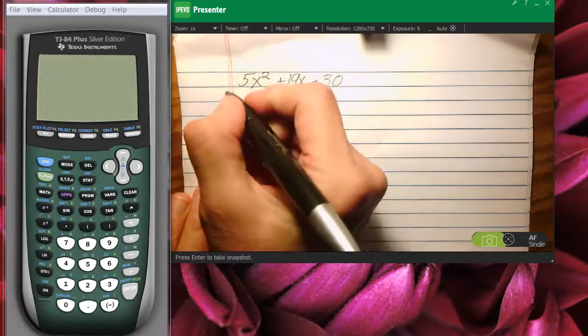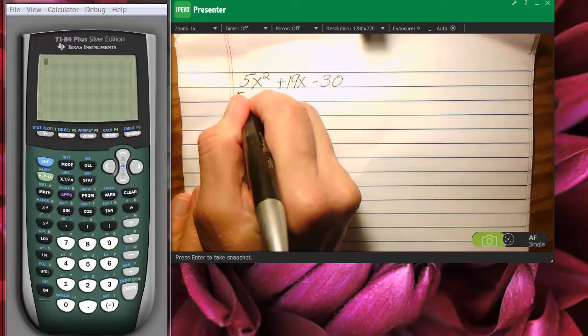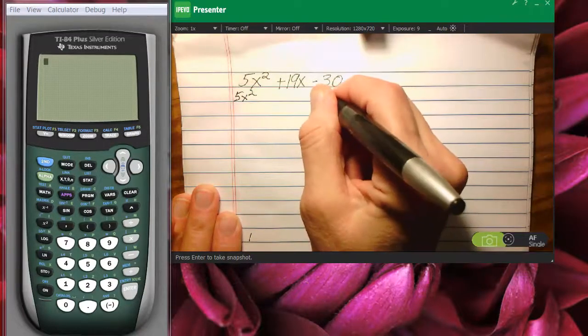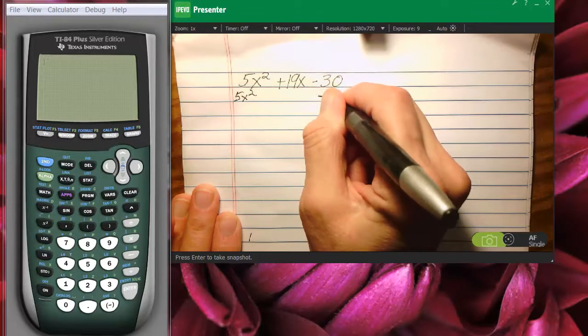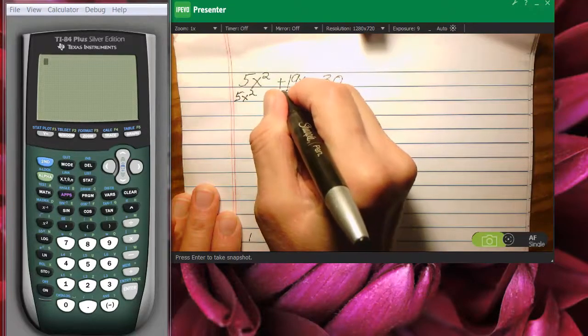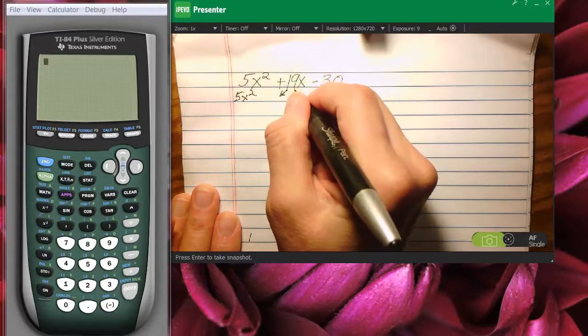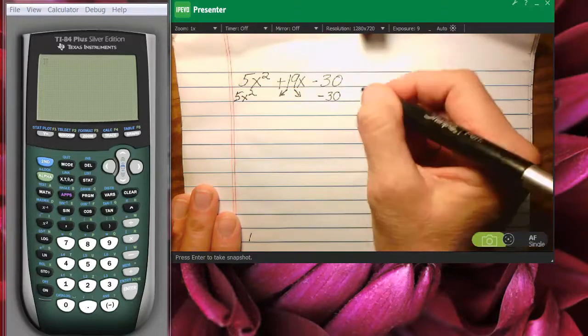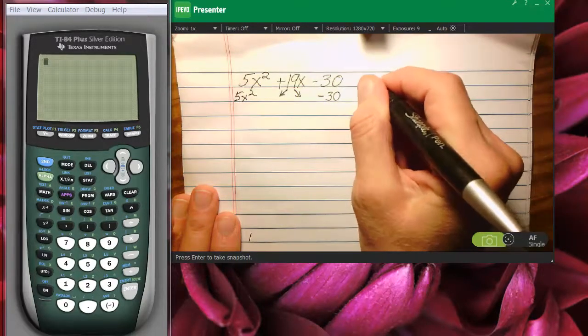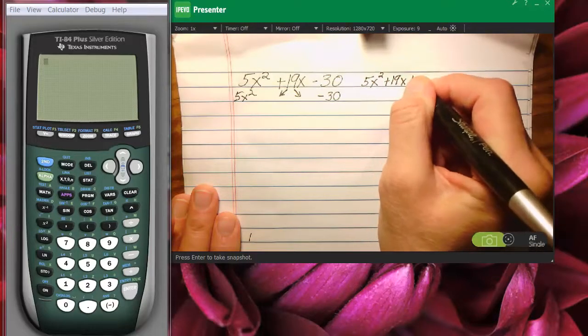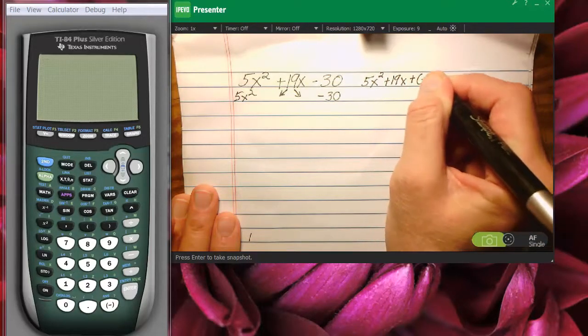That is, what we're going to do is we're going to leave 5x squared the way it is, and we're going to leave minus 30 the way it is, but what we want to do is we want to separate 19x into two separate terms. So the first thing we're going to do here is rewrite our trinomial as 5x squared plus 19x plus negative 30.